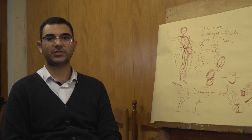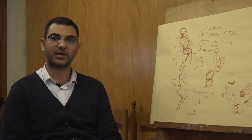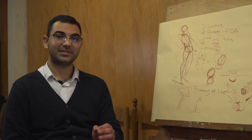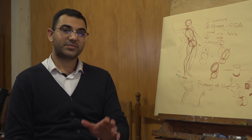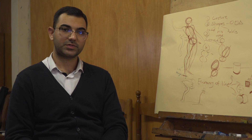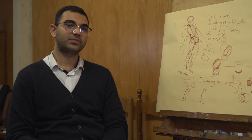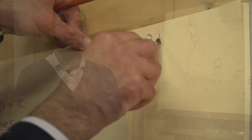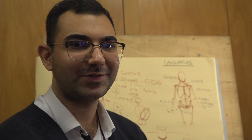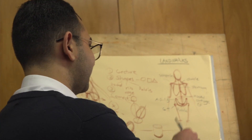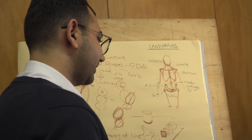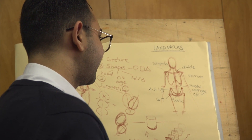Now you saw how we can add structure and forms and how we can connect them. But there's still one thing to learn: landmarks. I'm going to explain all of them and then add those important bony landmarks of the body to connect all the parts together in a clear way. Let's take a look at the things necessary to know for the front view.